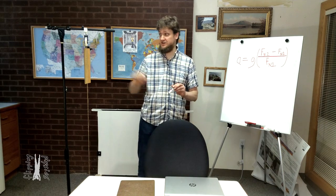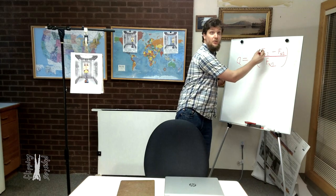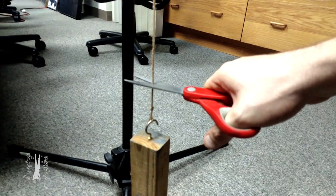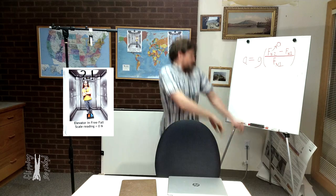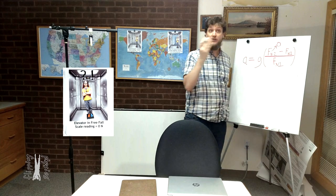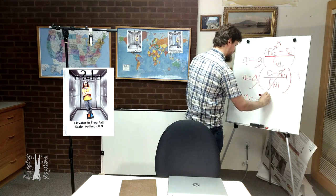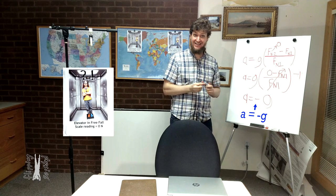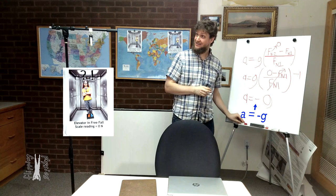My favorite example: if we set force normal two equal to zero and substitute zero for force normal two, then you can show that acceleration in the y-direction is equal to negative g. That is really familiar — it's the acceleration of an object in the y-direction when the object is in freefall. If there is no force normal acting on Bo in the elevator, the elevator is accelerating downward so fast that Bo is in freefall.